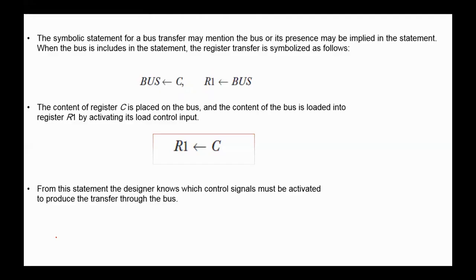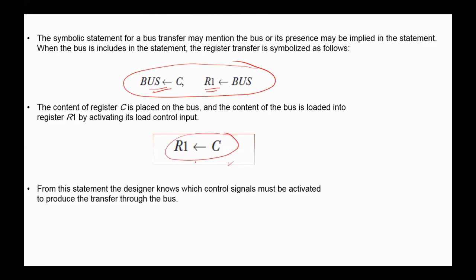The symbolic statement for a bus transfer may mention the bus explicitly — for example, the contents of register C are placed on the bus, and the contents of the bus are loaded into R1 by activating its load control input. Or its presence may be implied in the statement — you can directly write C→R1. From this statement, the designer knows which control signals must be activated to produce the transfer through the bus.